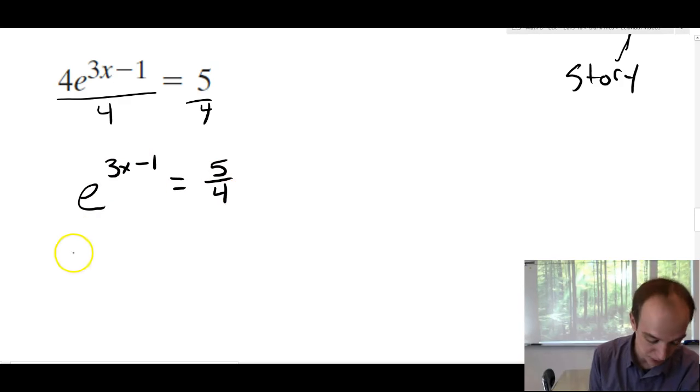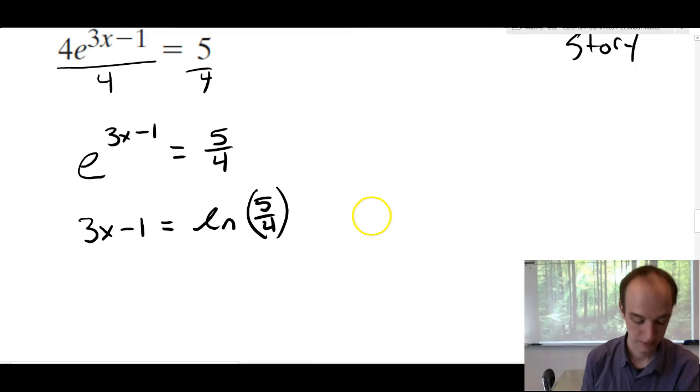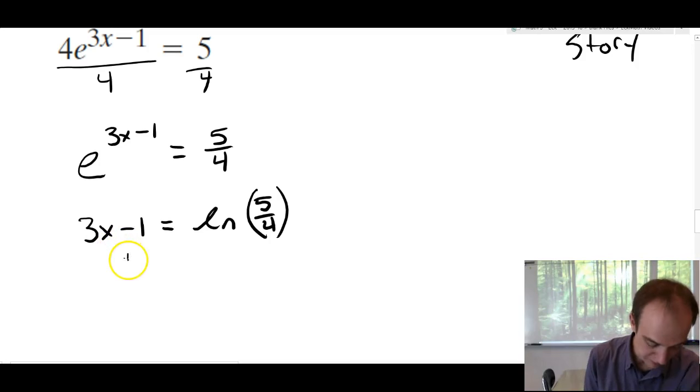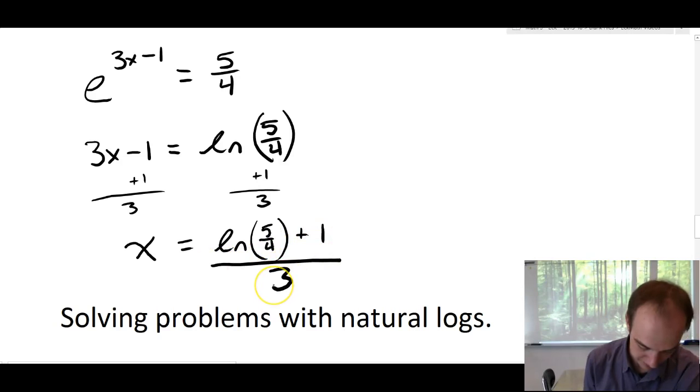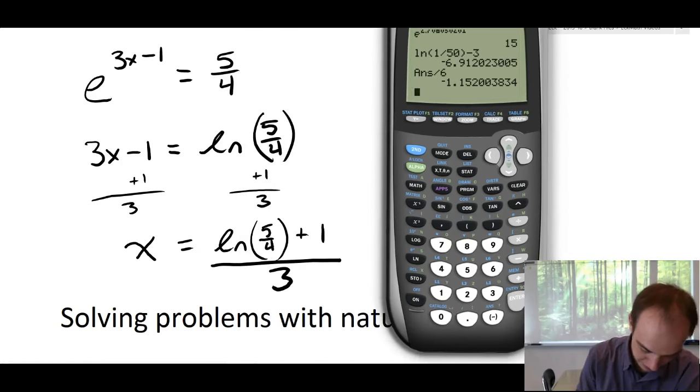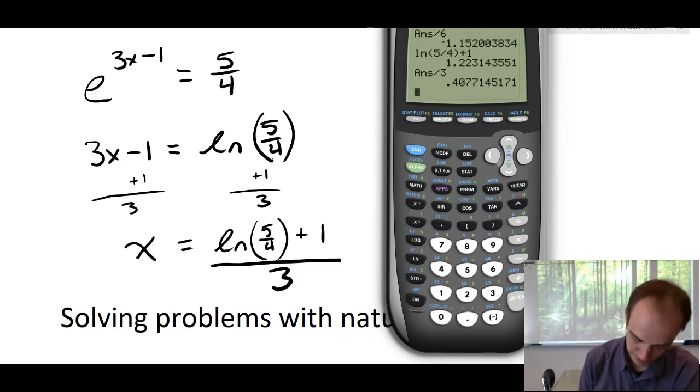So, you can get e to the 3x minus 1 is equal to 5 over 4. Now, we're going to do the natural log step. So, converting this to log form, you're going to get 3x minus 1 is equal to the natural log of 5 over 4. Then, we'll keep doing algebra. Add 1 and divide by 3. So, you're going to get x is the natural log of 5 over 4 plus 1 all over 3. And again, we can put that in our calculator and divide by 3, something like .4077.